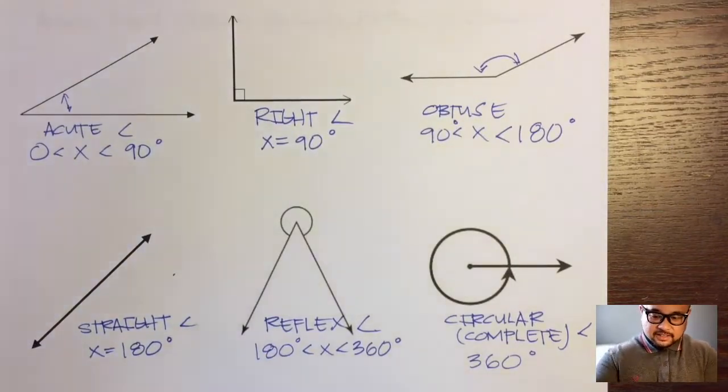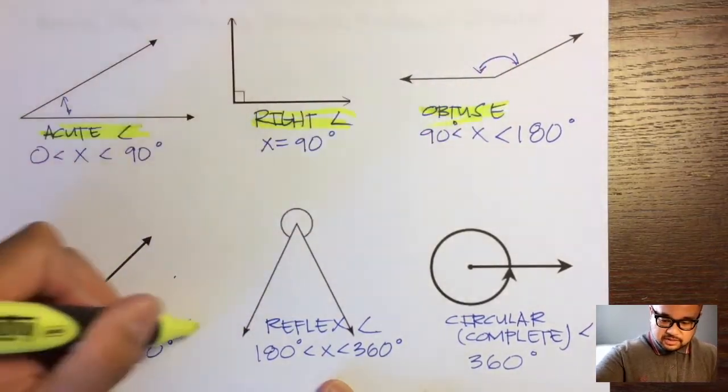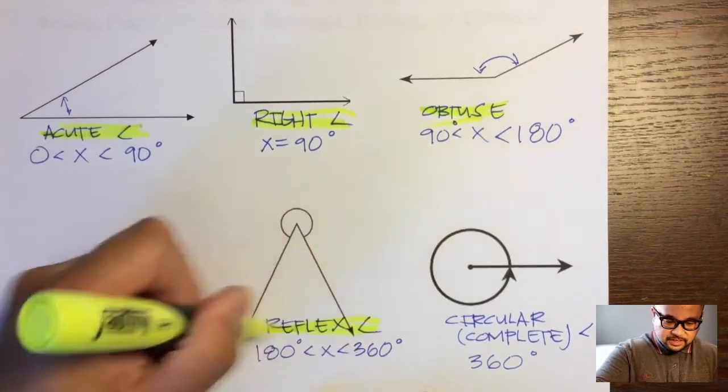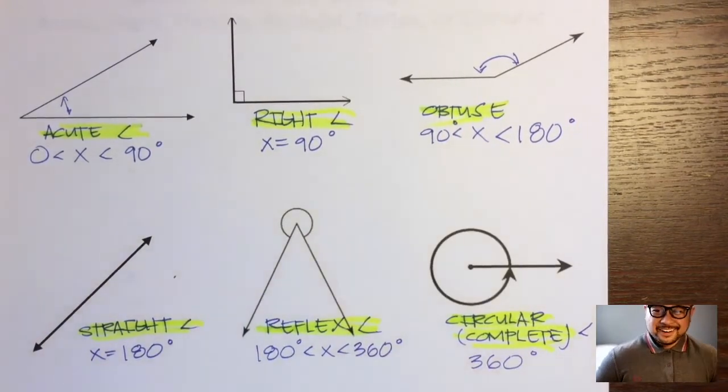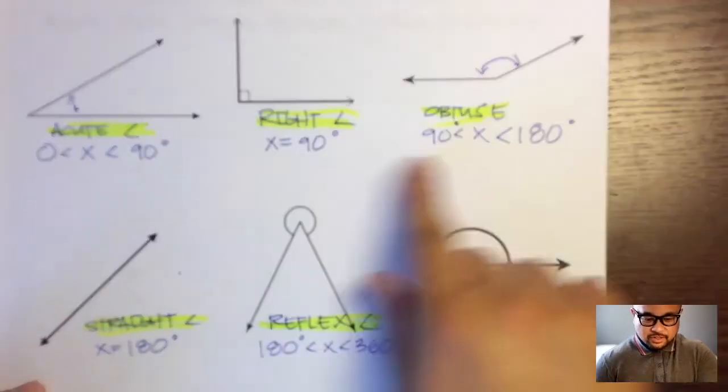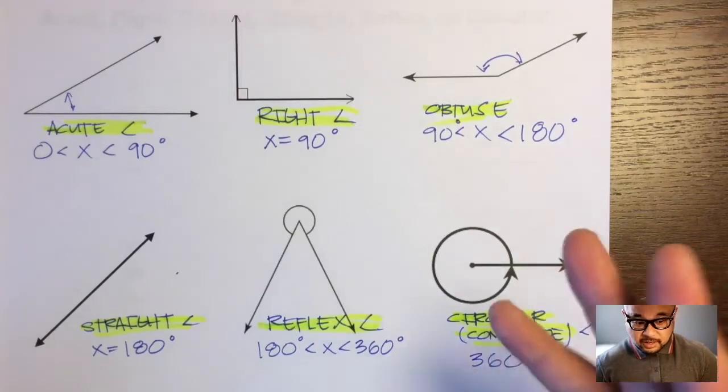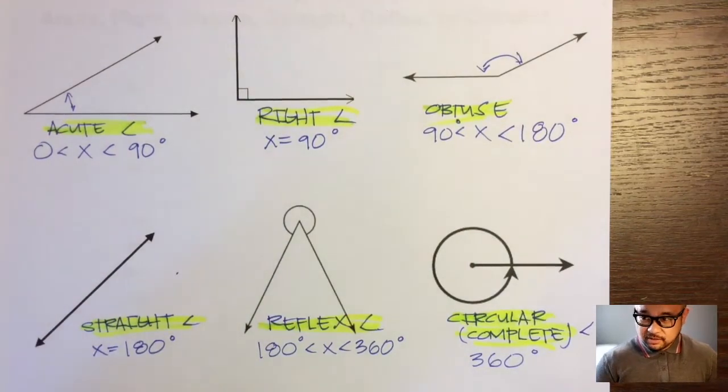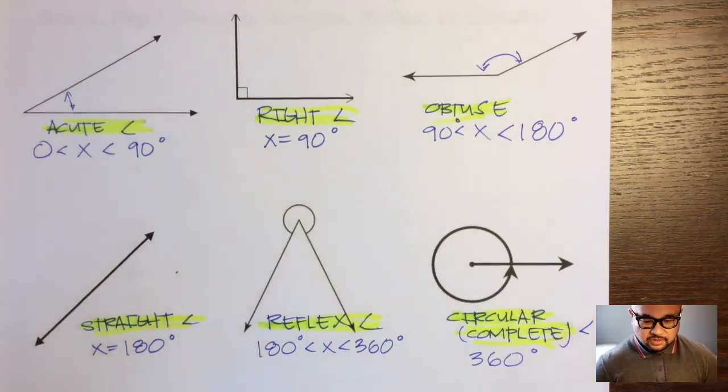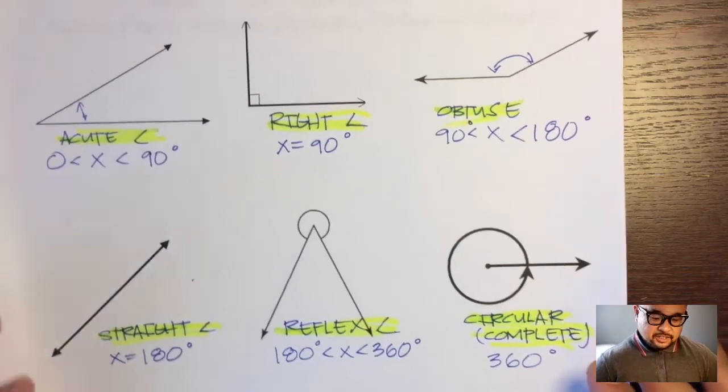Take your highlighters and highlight all six of these names. Acute, right, obtuse, straight, reflex, and circular. Or in some circles, they like to call circular angles complete. So those are the six types of angles and their measurements. Make sure you know if someone gave you a number like 91, you would know that's an obtuse angle. If someone said five degrees, that's an acute angle. Or 190, reflex. 180, straight. 360, circular. 90, right. But if someone said 90.1, then that would be obtuse.